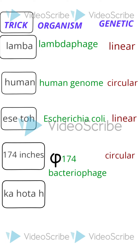First thing to remember: the trick for the shape starts from Linear, that is L, and not from C. When you know LC-LC, you have to match the correct organism to the shape, otherwise you will lose marks.